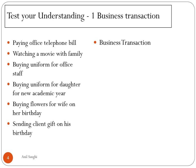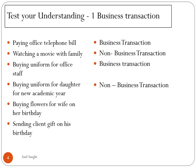Let us look at the answers. Paying the office telephone bill is a business transaction because the benefit accrues to the organization. Watching a movie with family — no, it is not. Buying uniform for office staff is a business transaction because through uniforms we bring discipline and uniformity to the office. Buying uniform for your daughter is a personal transaction and not a business transaction. Buying flowers for your wife — it is their personal life, and anything done in personal life cannot be classified as a business transaction. Sending a gift to a client on his birthday — yes, it is a business transaction, because here we are maintaining a good relationship with our clients and customers.